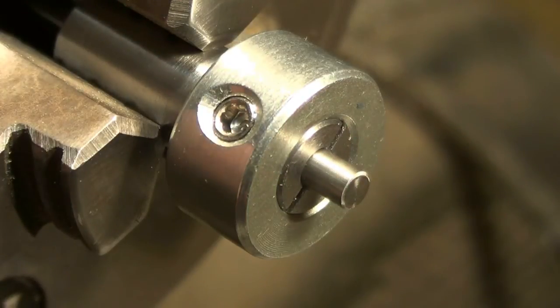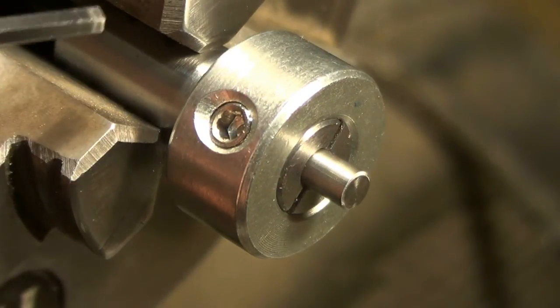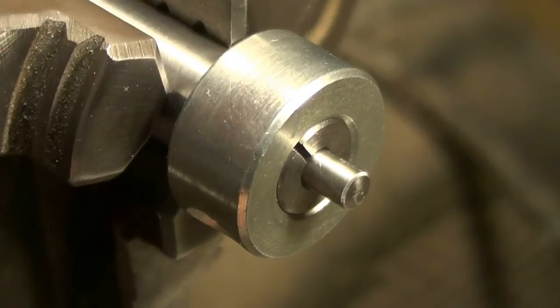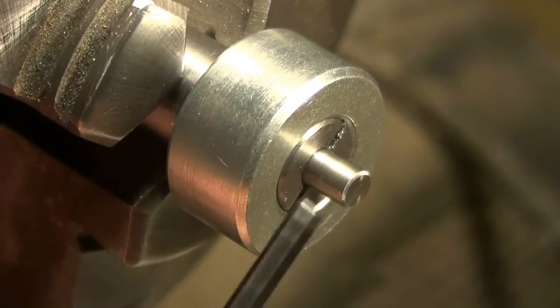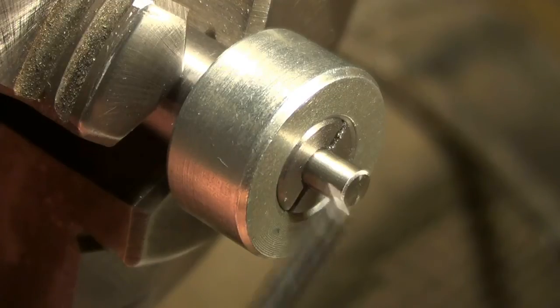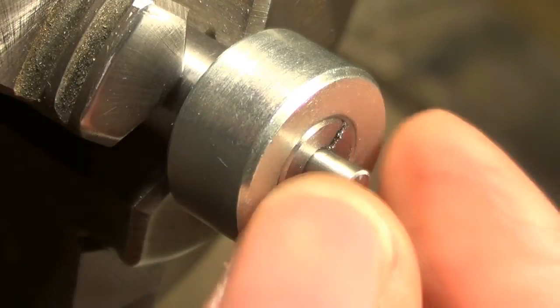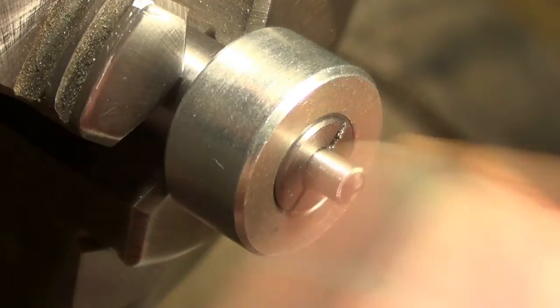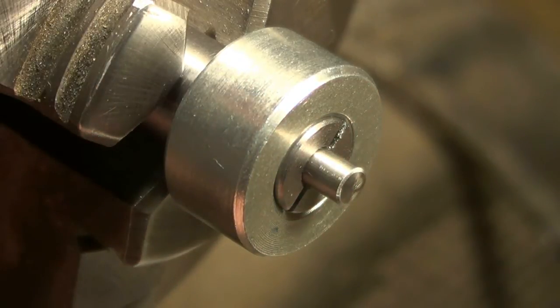You can mount the split collet in the four jaw chuck and then clock the four jaw chuck in with the workpiece in place. You can then remove the workpiece, reinsert it every time, and it will be exactly concentric.